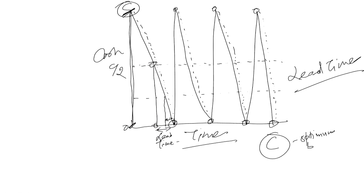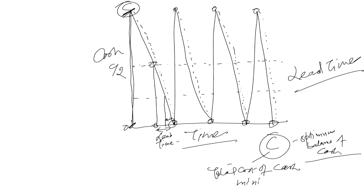With the help of this model, we find C — the optimum balance of cash to maintain at all times. C is called the optimum balance because at this level the total cost of maintaining cash is minimum. The total cost cannot be lower than at point C.